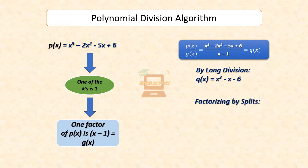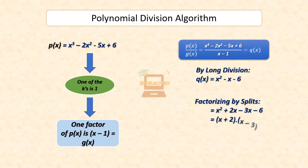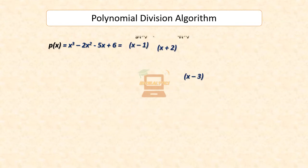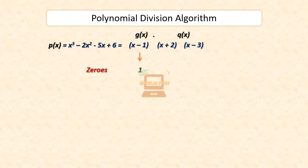Next, you could get the factors of x squared minus x minus 6 by splitting the middle term, as x plus 2 times x minus 3. So you get the factorization as x minus 1 times x plus 2 times x minus 3. This means that the three zeros are 1, minus 2, and 3.